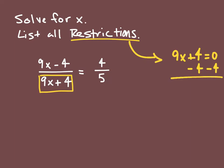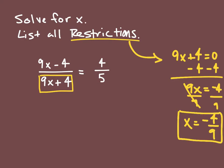I'm going to subtract 4 from both sides and I get 9x is equal to negative 4. Divide by 9, and we get that x is equal to negative 4 over 9. These are my restrictions.